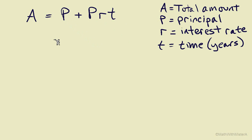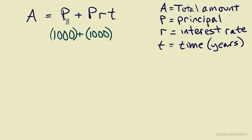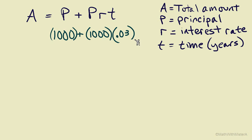For example, if we're investing $1,000, we can substitute 1,000 in place of P. Let's also assume that our interest rate is 3%. In the formula, we want it to be a decimal: 0.03. Lastly, we'll make this a five-year investment, so T equals 5.